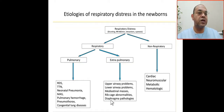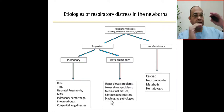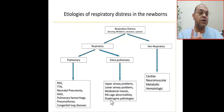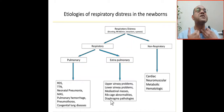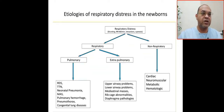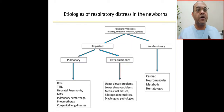If extra-pulmonary, it will be airway — upper airway or lower airway — like partial upper airway obstruction, laryngomalacia, laryngeal web, or any abnormalities in the larynx. Also mediastinal masses, or ribcage abnormalities like skeletal dysplasia or skeletal disorders.